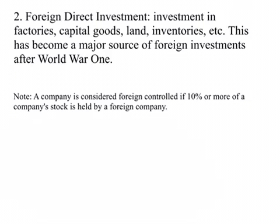Beginning from World War I, foreign direct investment became relatively more important than foreign portfolio investment around the world, and the US became a major supplier of FDI. Companies in the US like Coca-Cola, Ford, and General Motors operated in more than one foreign country. Companies which operate in more than one foreign country are called multinational corporations, or MNCs in short.